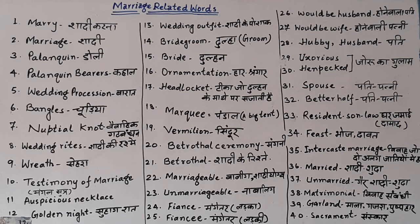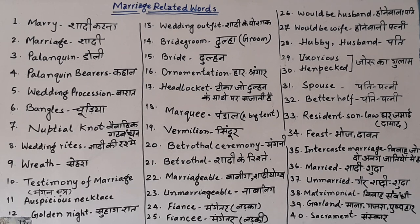The twelfth word is 'golden night,' which means 'suhag raat.' The thirteenth word is 'wedding outfit' — the dress worn at a wedding, the 'shadi ke jode,' is called 'wedding outfit.'